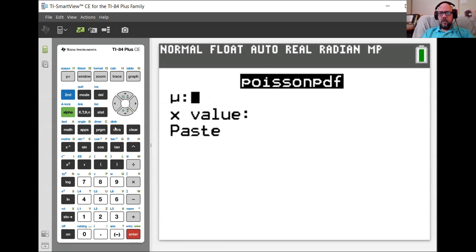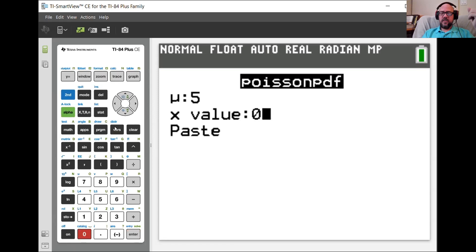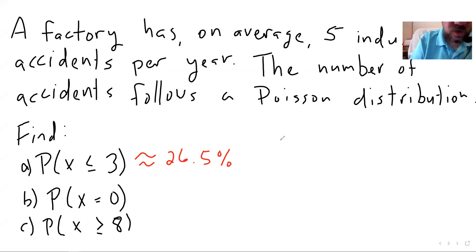Average number of accidents in a year is five. I want to know what the probability of getting no accidents is. Small 0.0067. So about 0.67%. Let's write that down. Not very likely. They probably need to beef up their safety precautions.